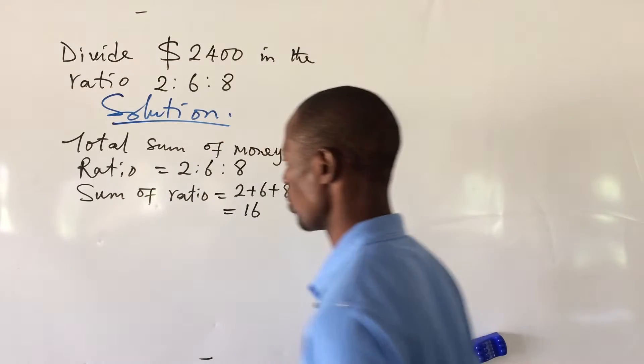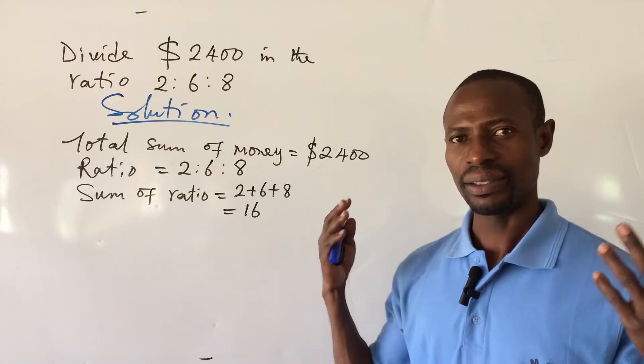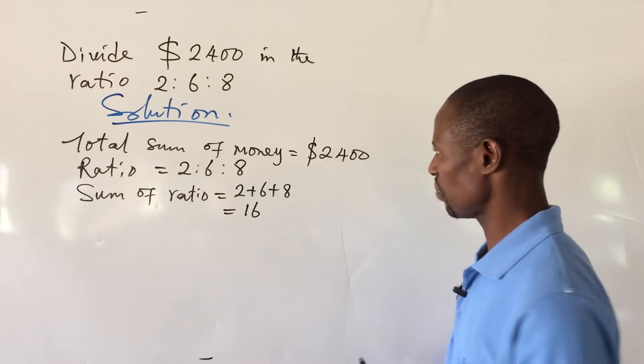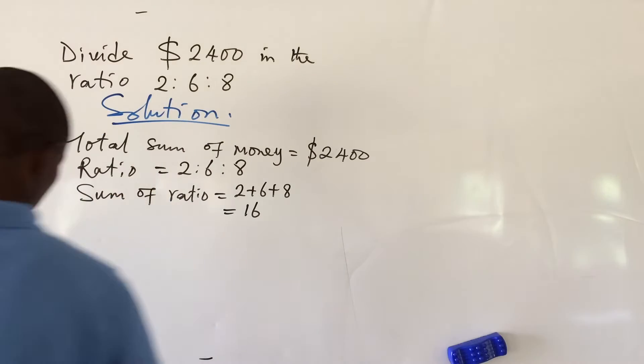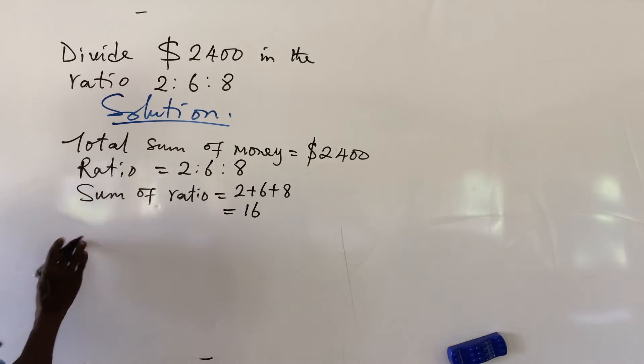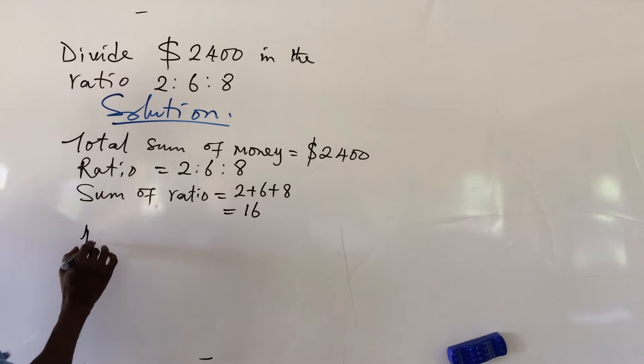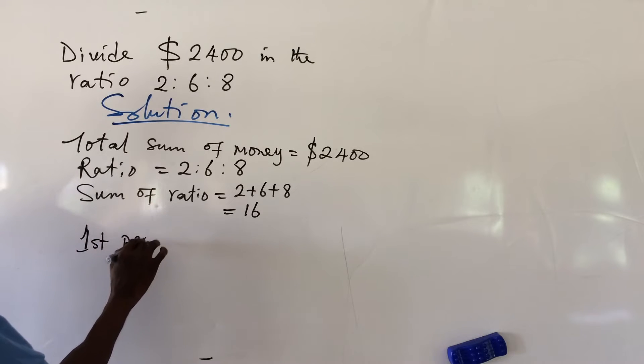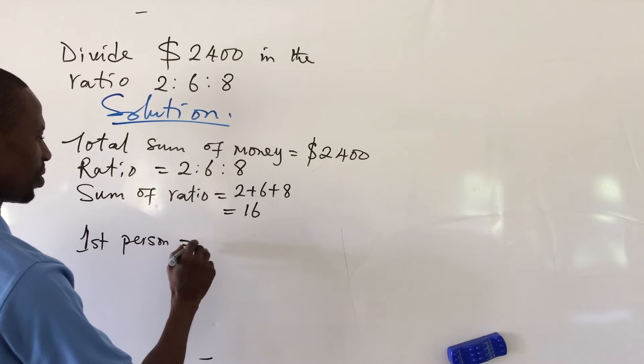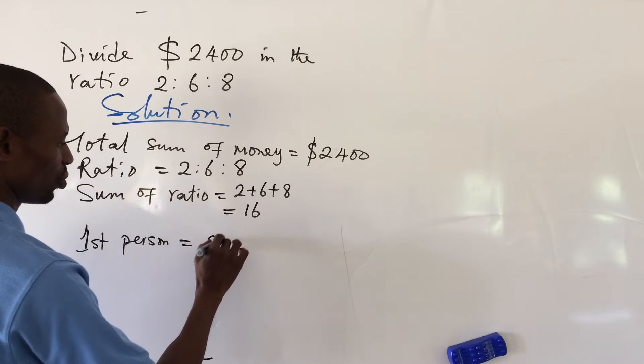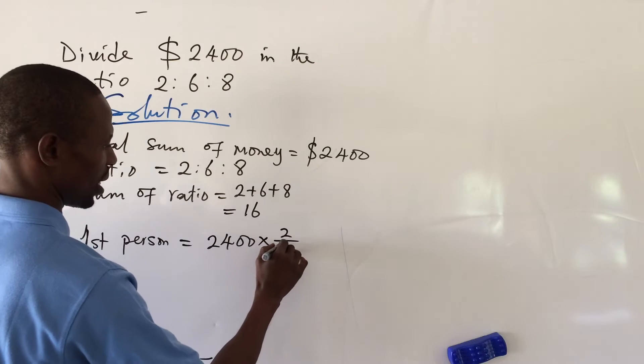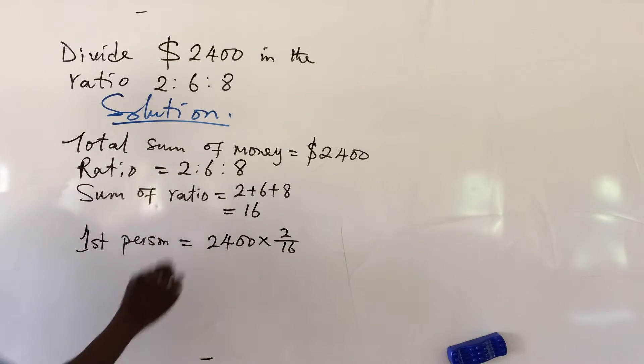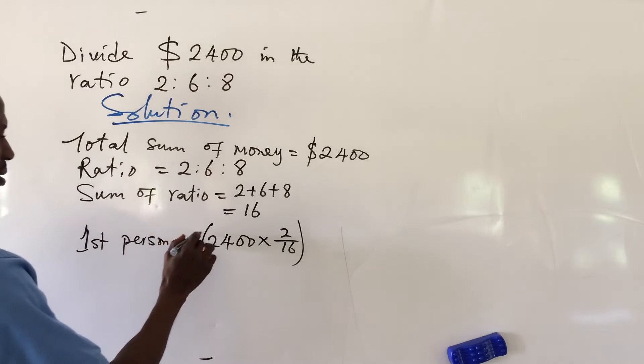So we've gotten what we want here. Now the next we'll look at is the first person or the first portion of this money. So we'll say first person. How much will the first person go with? This will give us $2400 times 2 over 16. Let's put this in bracket, in dollars.